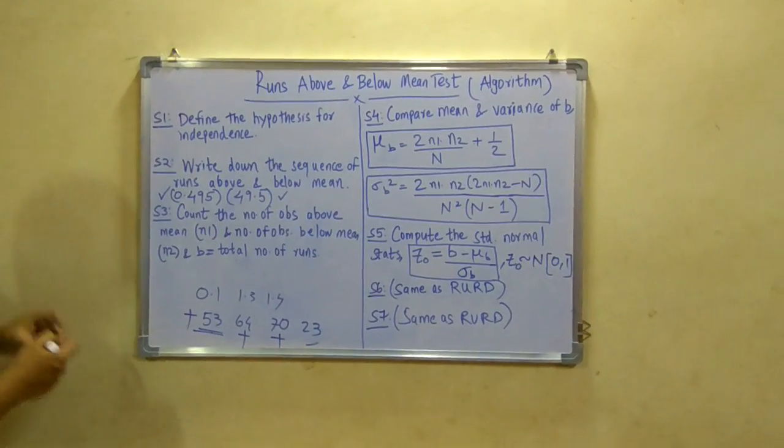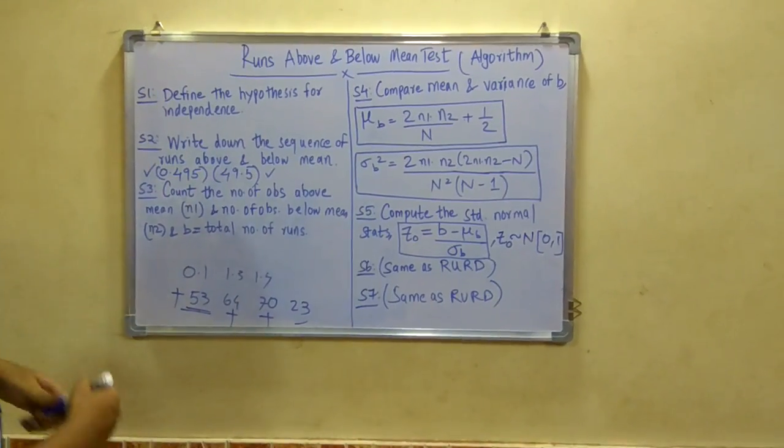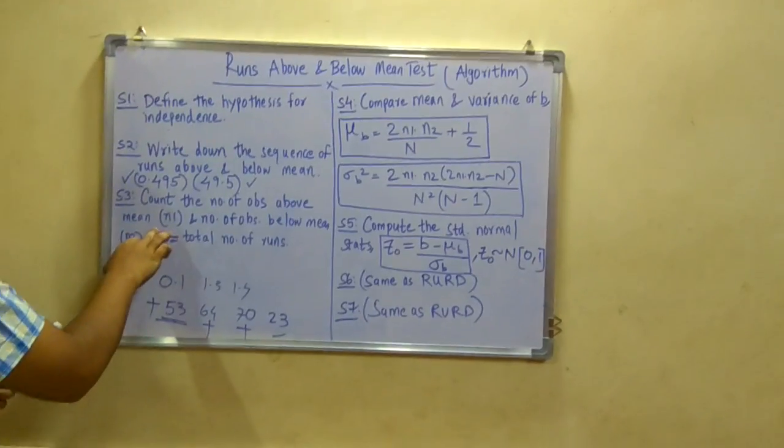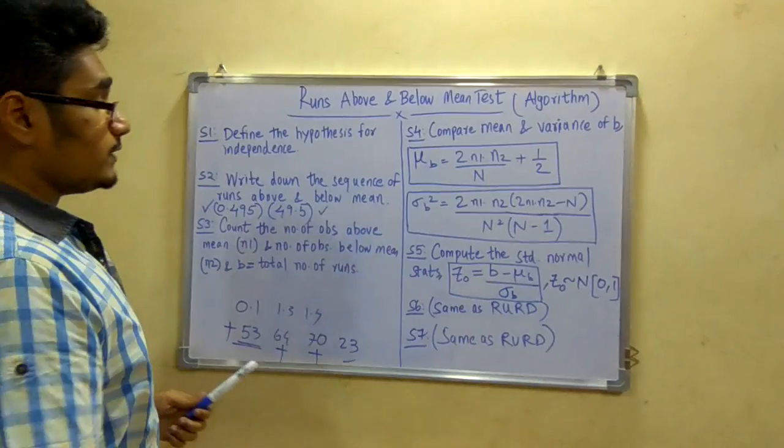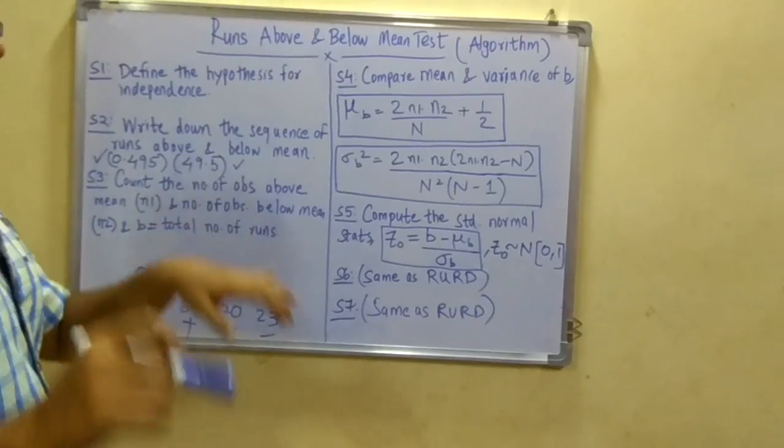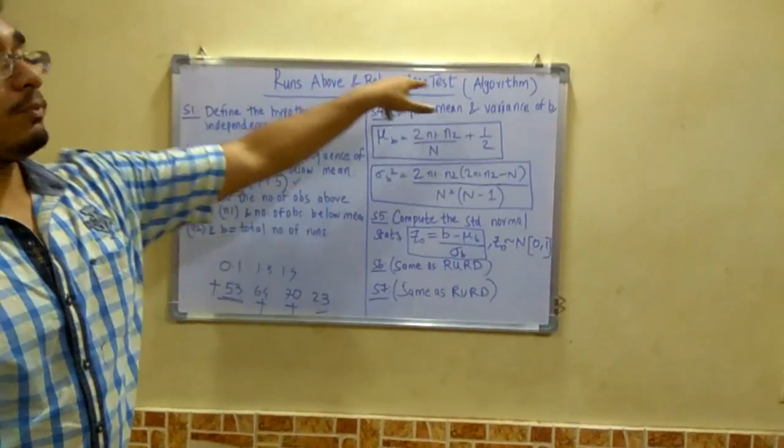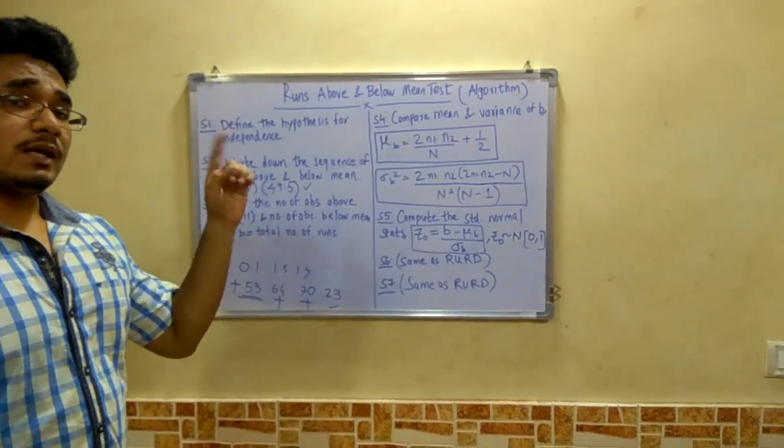So this is the algorithm. Next you have to count the number of observations above and below the mean. That is for above the mean, it is n1. And number of observations below the mean, that is n2. And count the b, that is the total number of runs. Now b for runs above and below mean, and a for runs up and down.